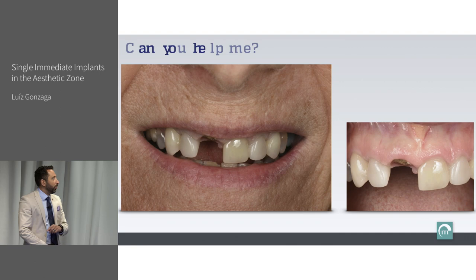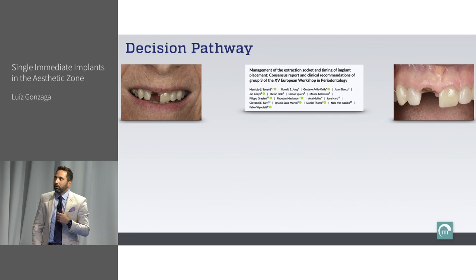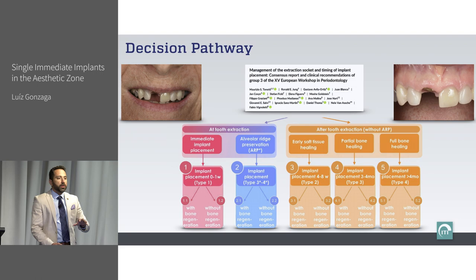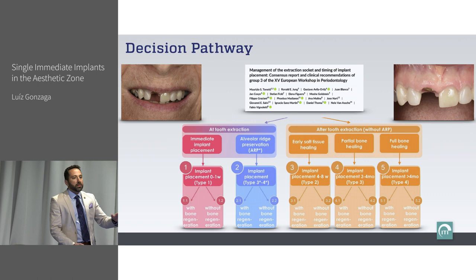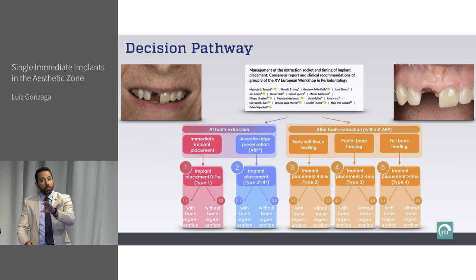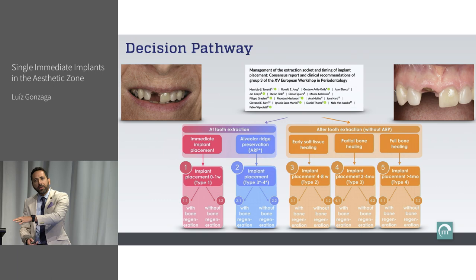So here we have a decision to make. The tooth may still be present — are we going to attempt to remove the tooth that cannot be restored and place an implant? Are we going to remove the tooth, put something inside the socket, and come back later? Or are we going to remove the tooth, do nothing, and come back during the healing process to place an implant? Or are we going to wait for complete healing of the ridge and come back?